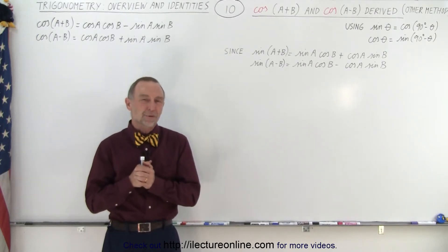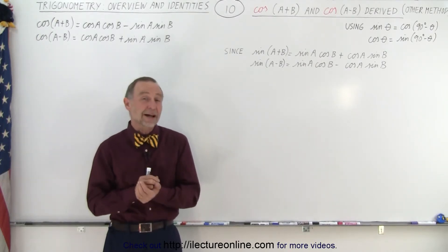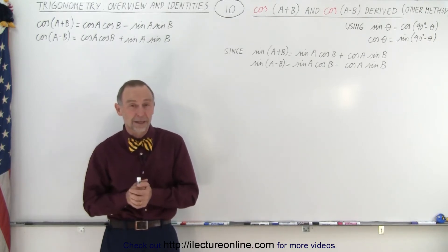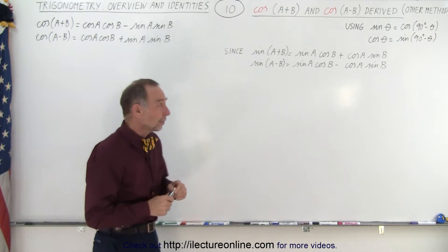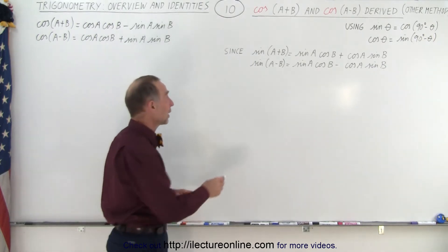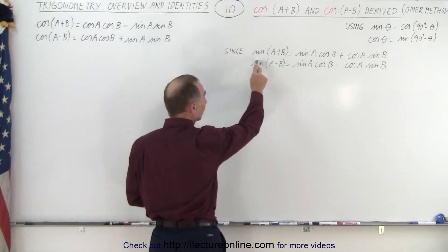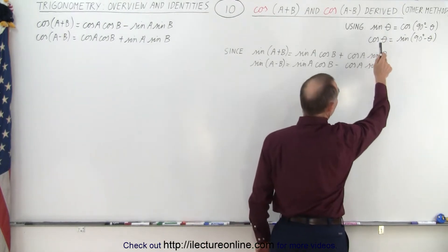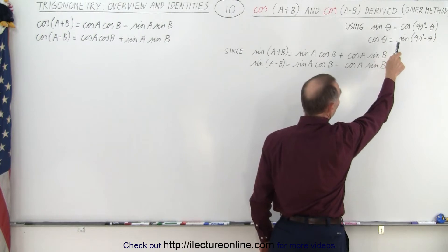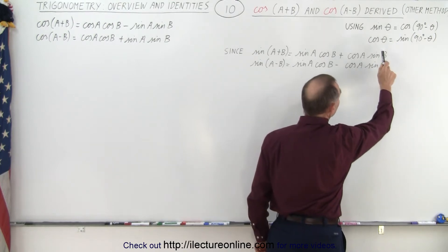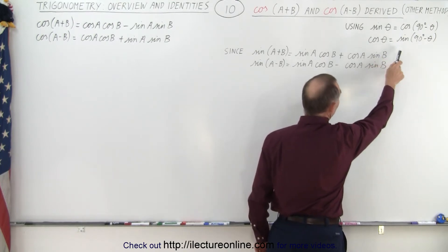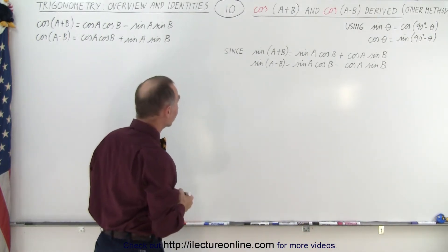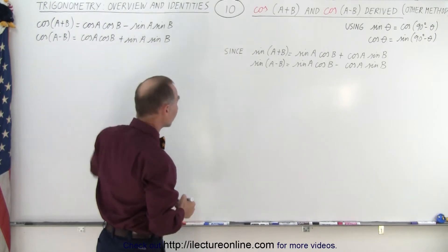Welcome to our lecture online. There's actually another method by which we can find the cosine of the sum and the cosine of the difference of two angles. To do this, we have to presume that we already know the sum and difference formulas for the sine function, and that we understand the relationship between sine and cosine: the sine equals the cosine of 90 degrees minus theta, and the cosine of theta equals the sine of 90 degrees minus theta. Once we know that, we can make the following assumption and try to prove this.